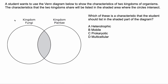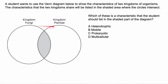The first question: a student wants to use the Venn diagram below to show the characteristics of two kingdoms of organisms. The characteristics that the two kingdoms share will be listed in the shaded area where the circles intersect. We want to figure out what goes there, because that means both the kingdom of Fungi and the kingdom Plantae — so plants — share something. Which of these is a characteristic that should go in the shaded part? A, heterotrophic; B, mobile; C, prokaryotic; or D, multicellular.